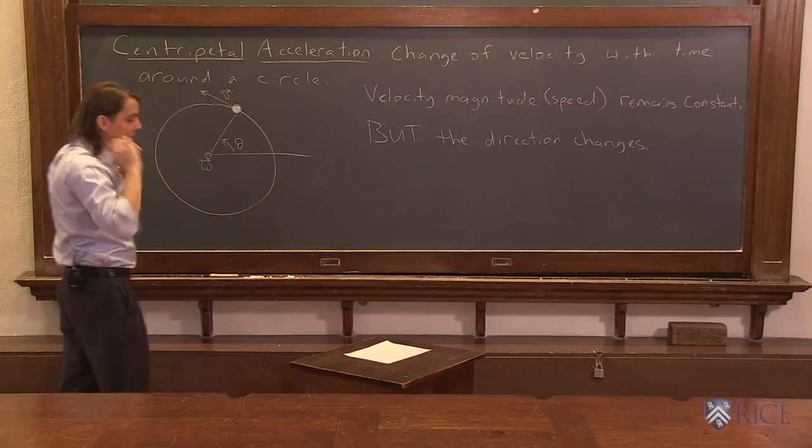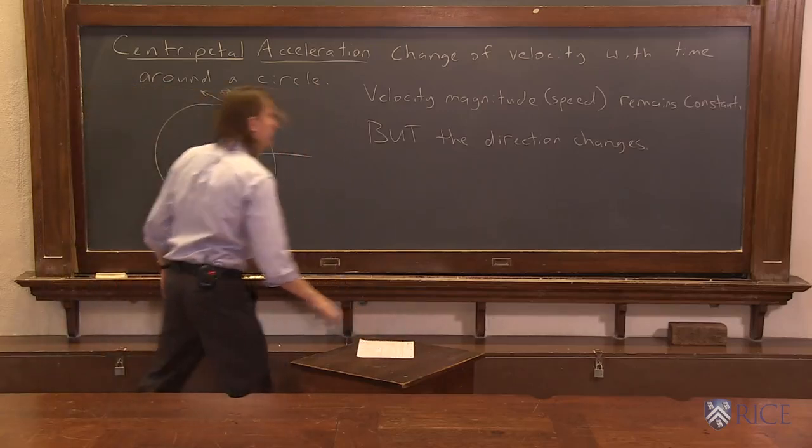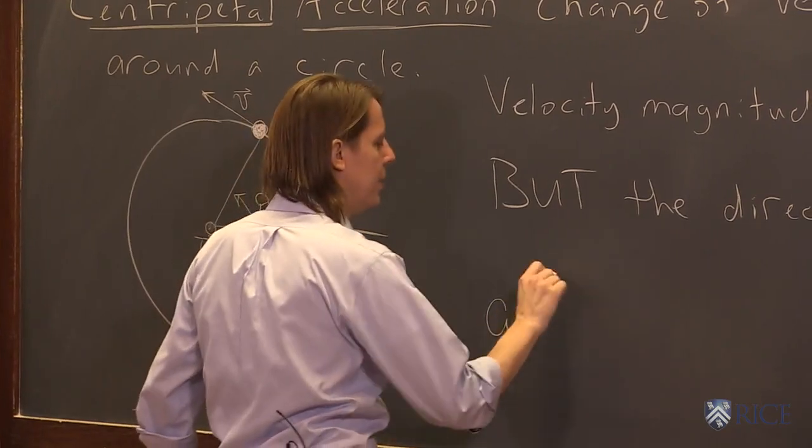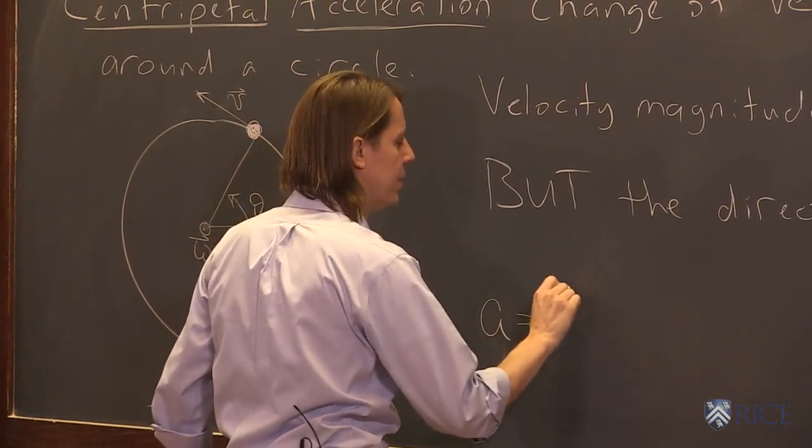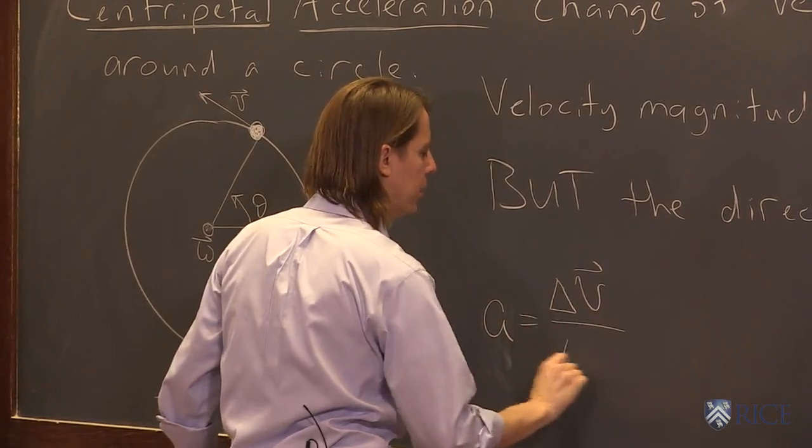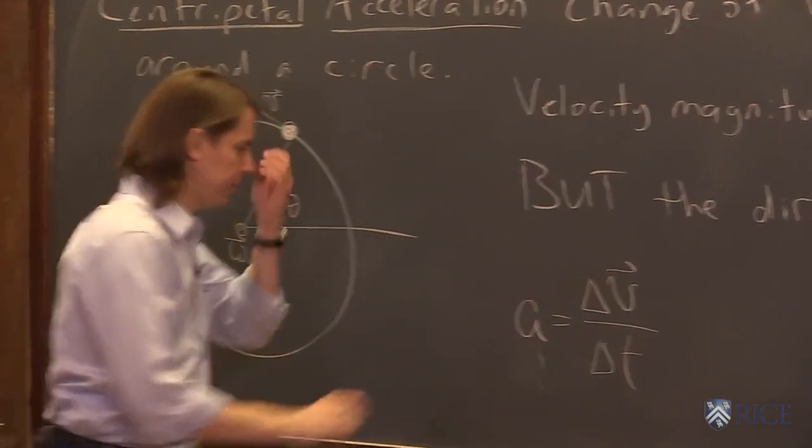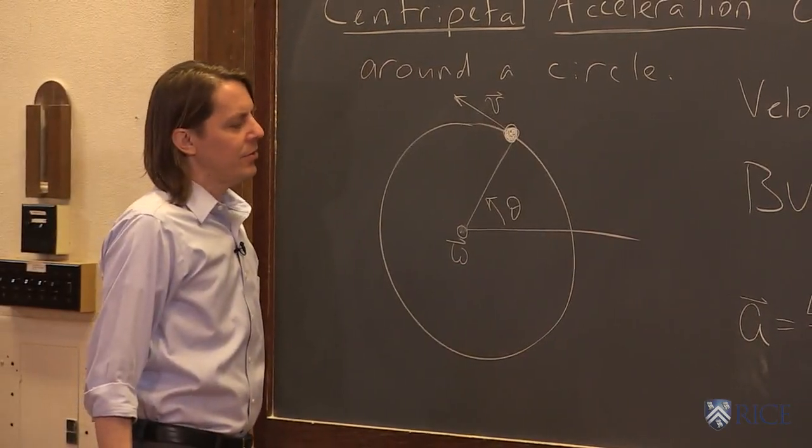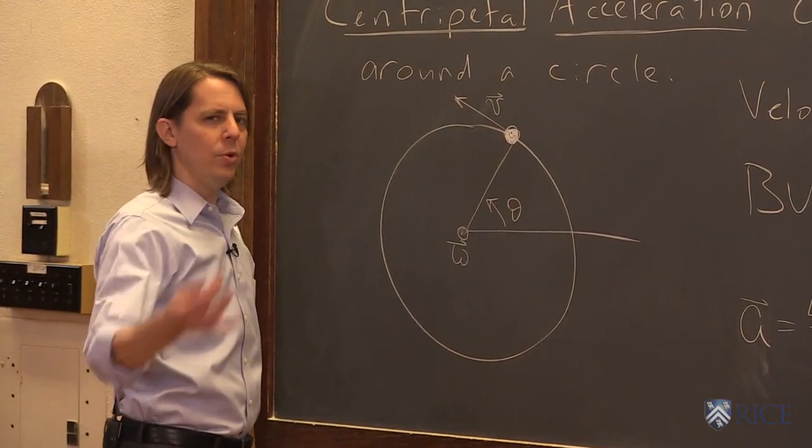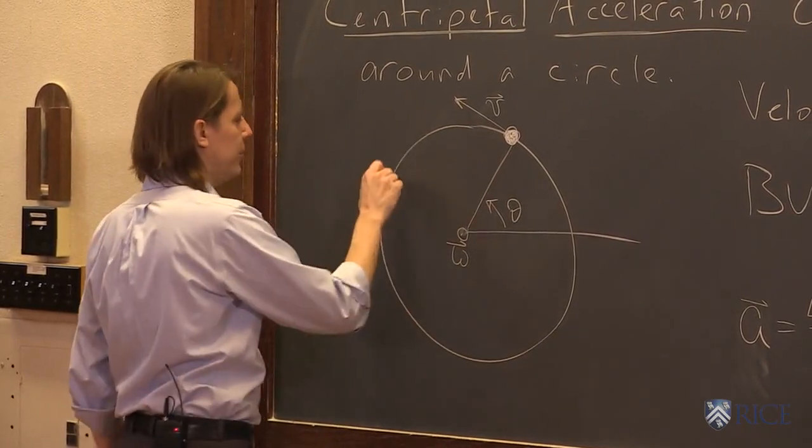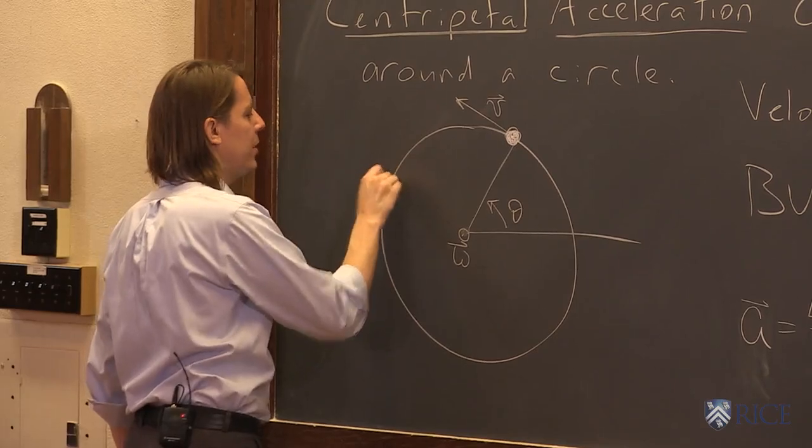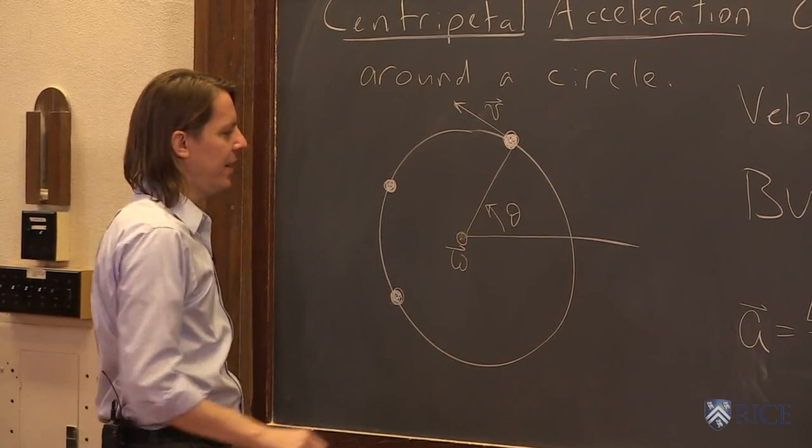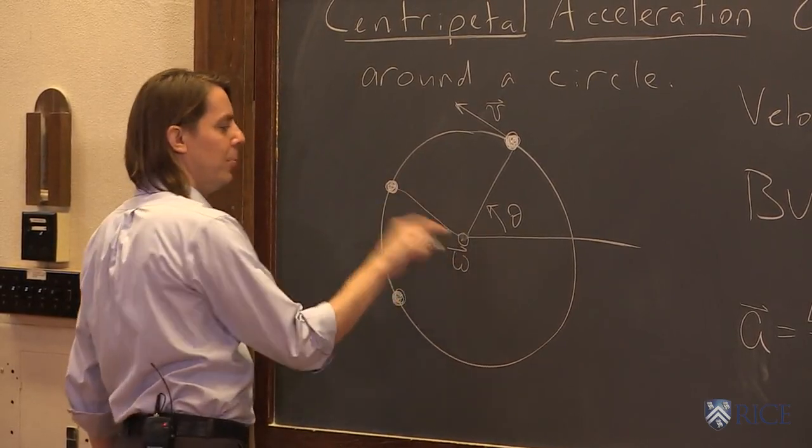So let's now calculate what this would be. If we want to calculate an acceleration, we'd say A is delta v over delta t. So let's think about this delta v. So what we want to do is look at two times around the circle. So let's imagine one time here, we'll call that naught, and another time here, we'll call that f.